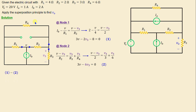By performing equation 1 minus equation 2, we obtain: 4V3 − 8 = 0, which means V3 = 8 / 4 = 2 volts.